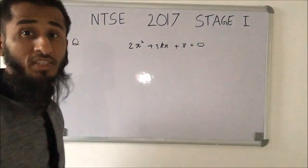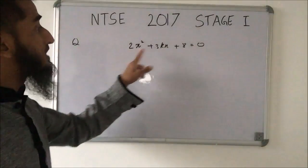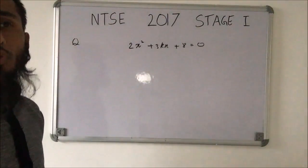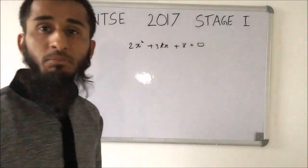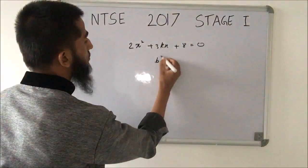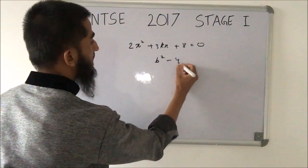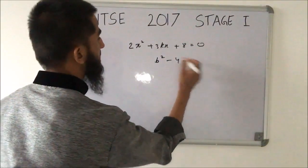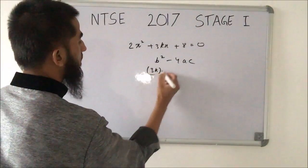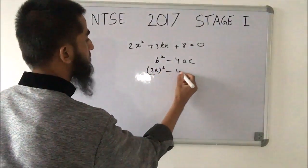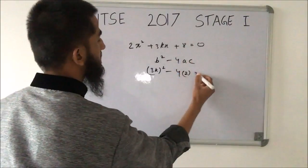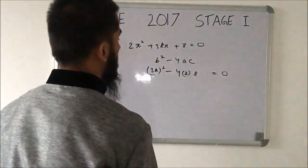This question says that the roots of the equation are equal. We know that if the roots are equal, the discriminant must equal 0. The discriminant formula is b² − 4ac = 0.